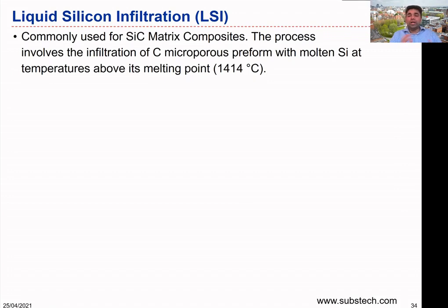Controlling the temperature and conditions is really important in this process. In particular, we have to maintain the temperature at a value higher than 1400 degrees Celsius. This is mainly because the melting temperature of silicon is 1414 degrees Celsius. We have to run the process above this temperature; otherwise, the silicon material may not be viscous enough to infiltrate properly into the fiber preform.